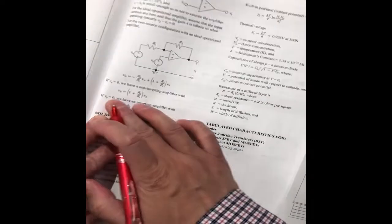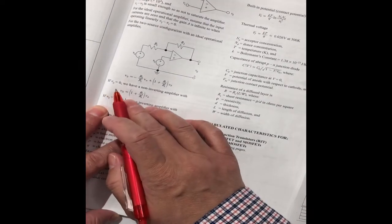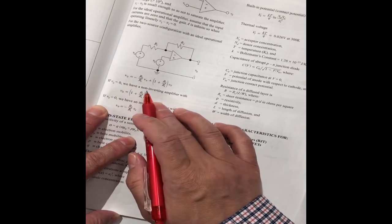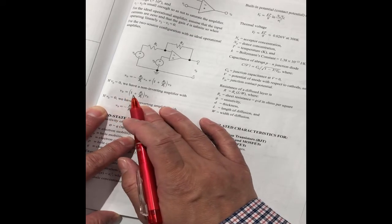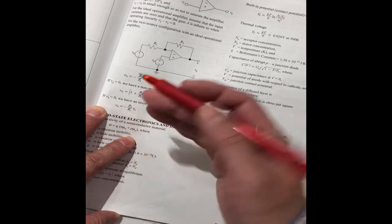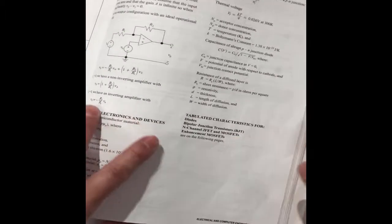So according to the formula, if VA is equal to zero, we can use the non-inverting amplifier with this one. V0 equals this one. So we can do the calculation. It's very easy.